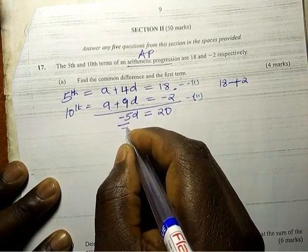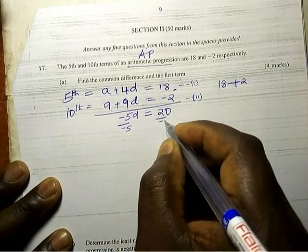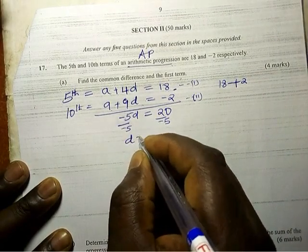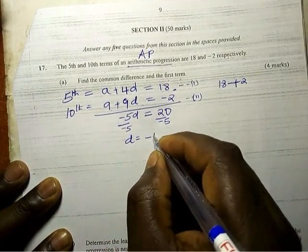So we divide by negative 5, divided by negative 5, so d is equal to negative 4.